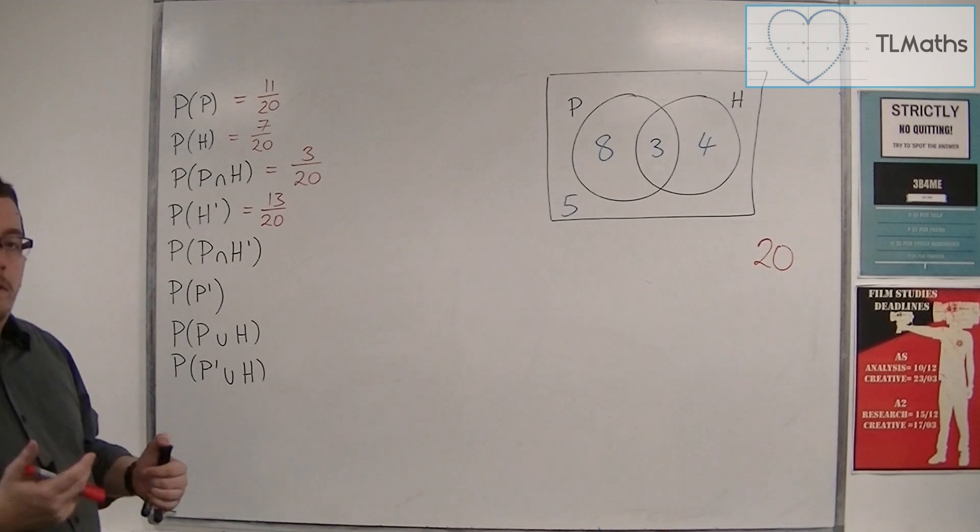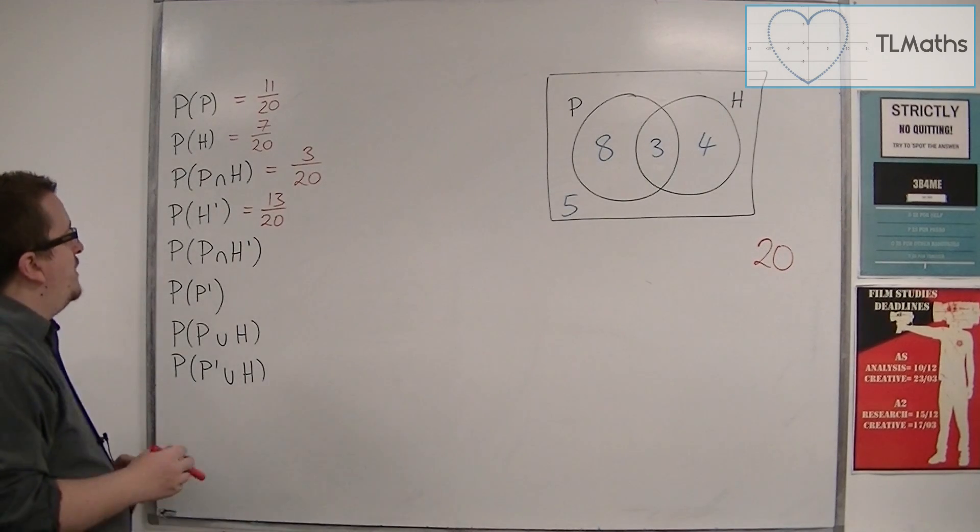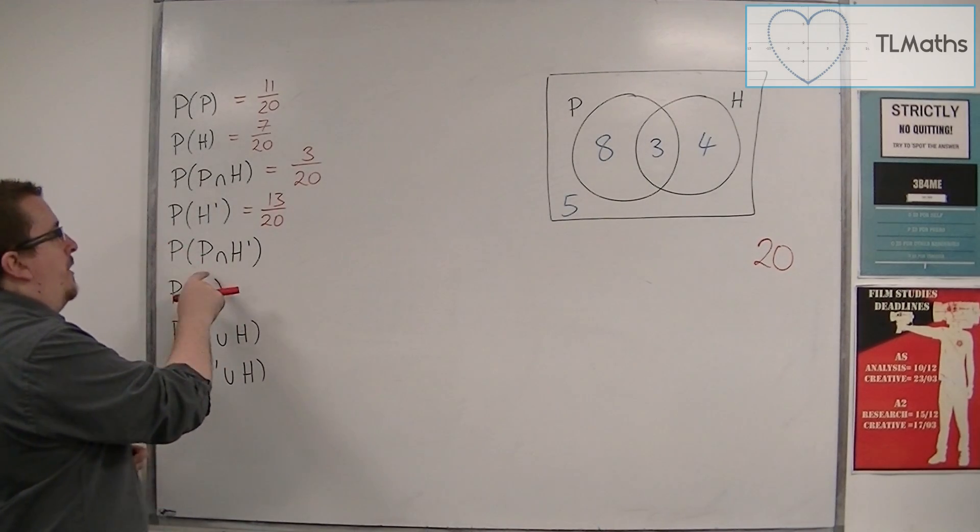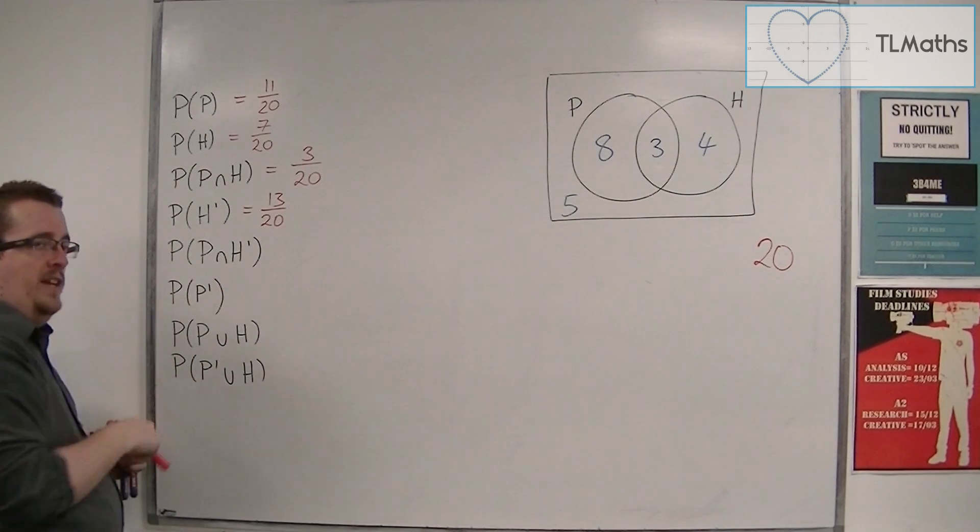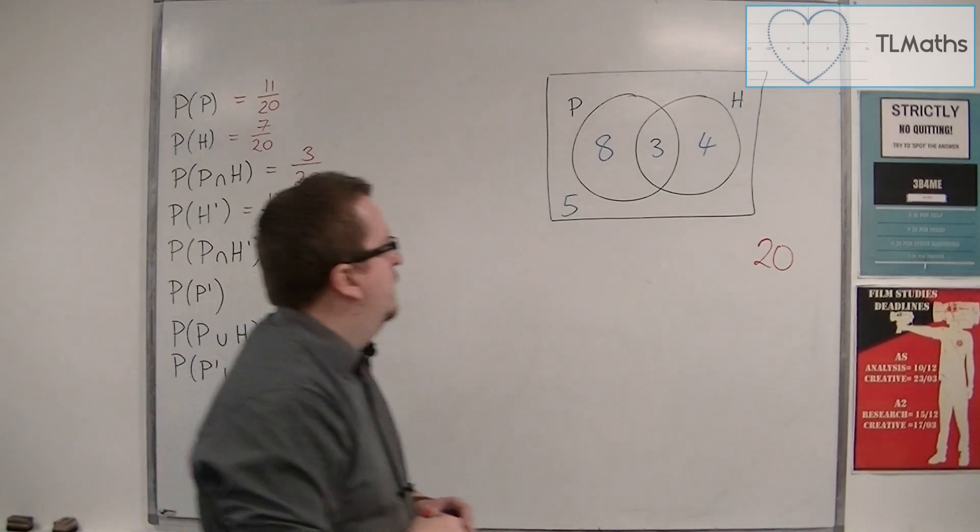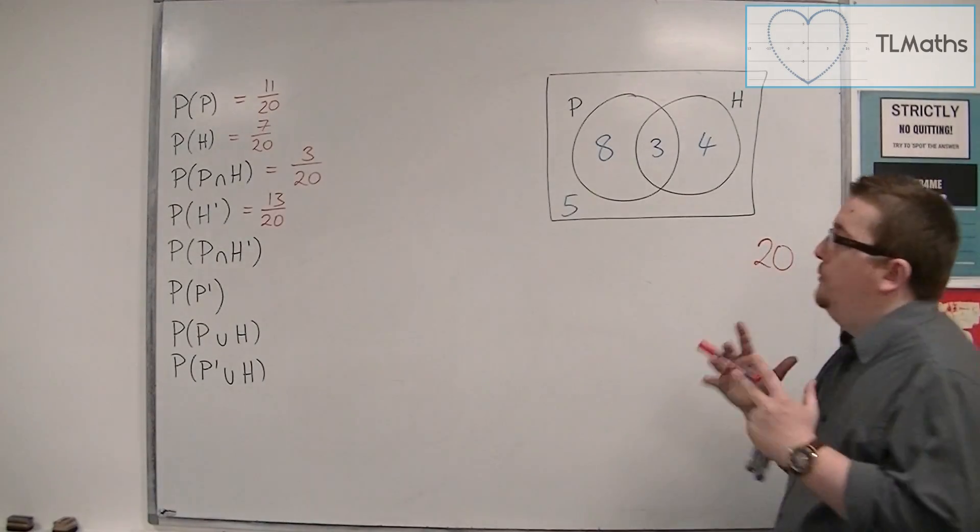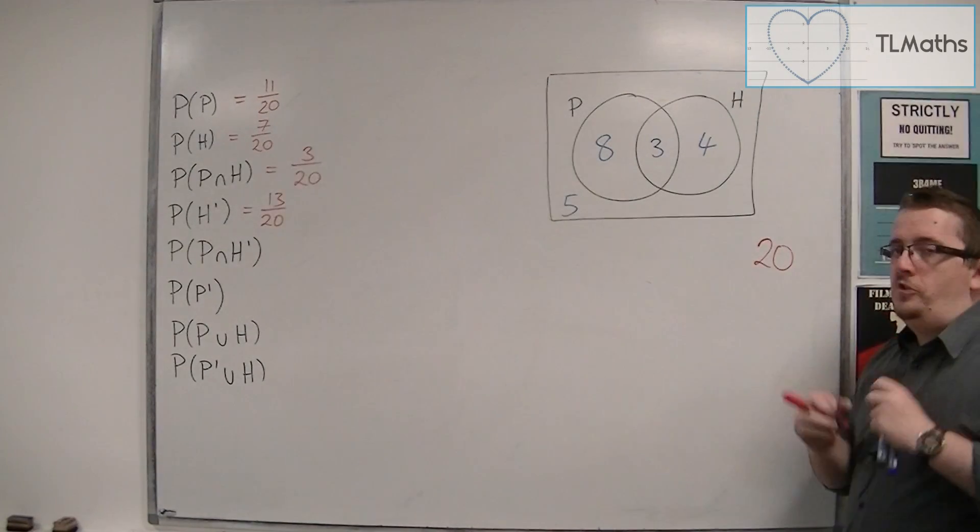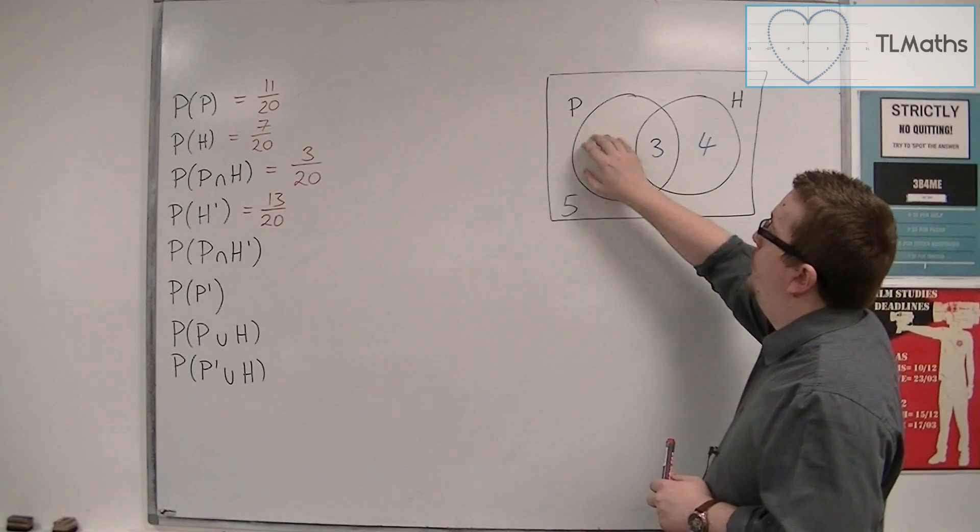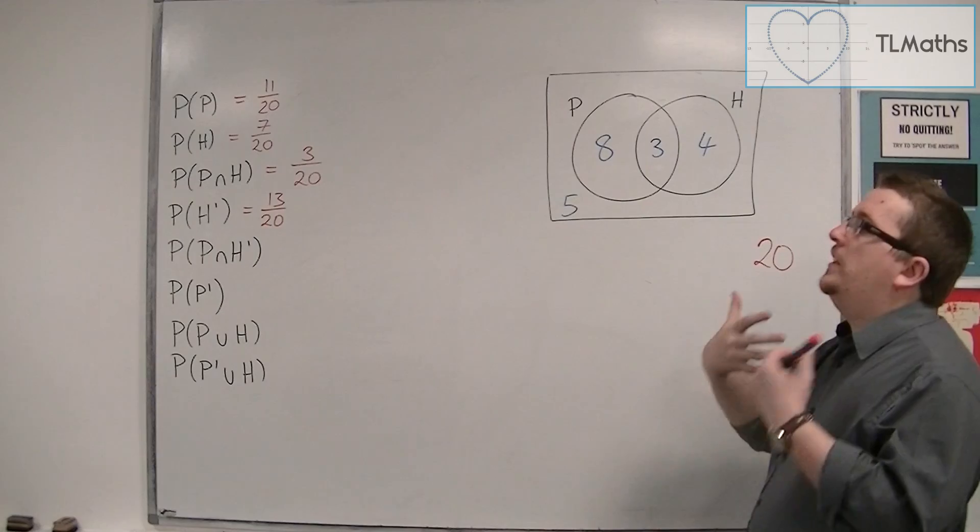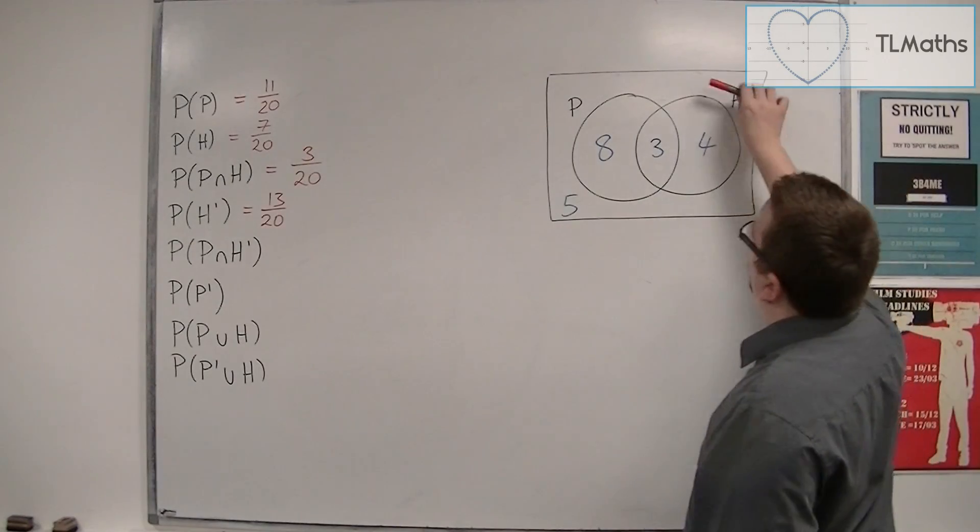Now we're getting on to a slightly more tricky one. What is the probability of a student studying physics and not history? So they don't study history, but they do study physics. And that would be those 8 there.